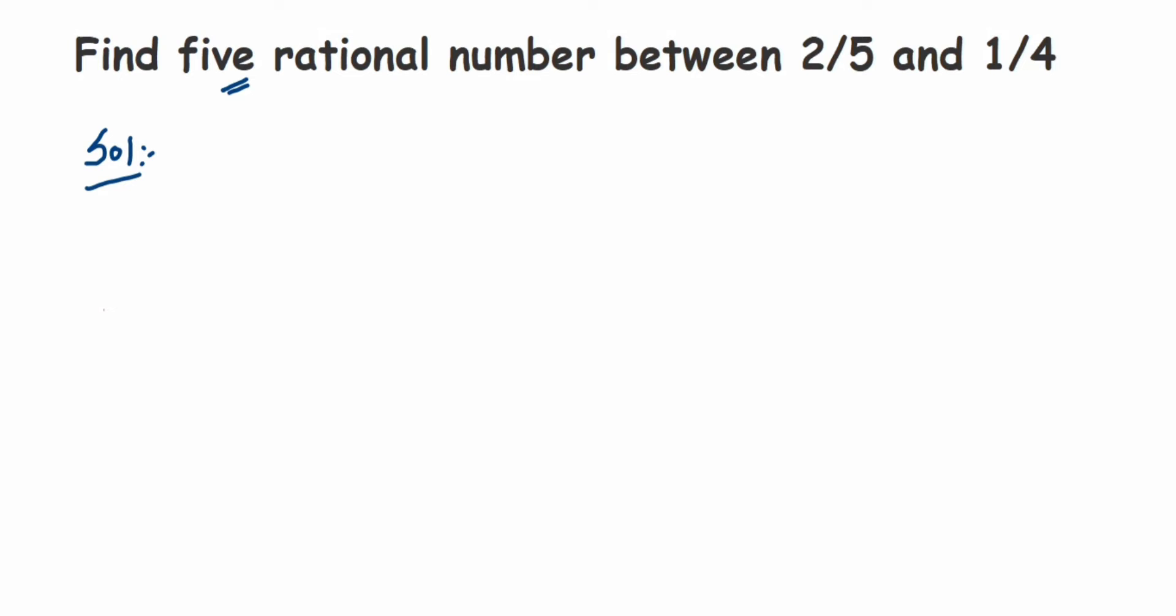The very first step is check if they are like fractions. If not, we have to convert them into like fractions, and that can be done by taking LCM. So here we're going to take LCM of 5 and 4, which is 20. Now I want to find out the equivalent rational number of 2 by 5 and 1 by 4 with denominator 20.